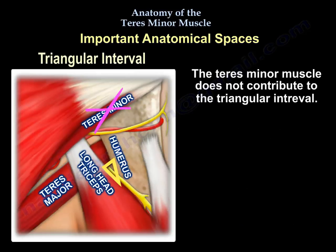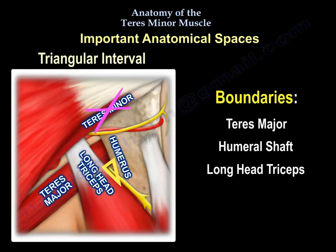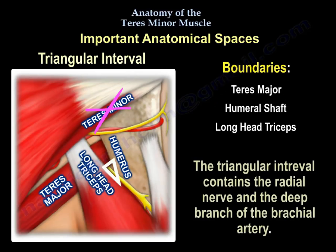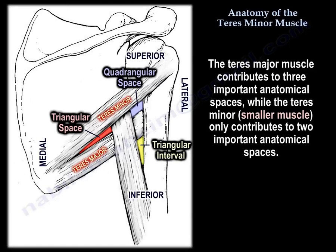The Teres Minor does not contribute to the triangular interval. The triangular interval is between the Teres Major, the humeral shaft, and the long head of the triceps. It contains the radial nerve and the deep branch of the brachial artery. The Teres Major contributes to three important anatomical spaces.